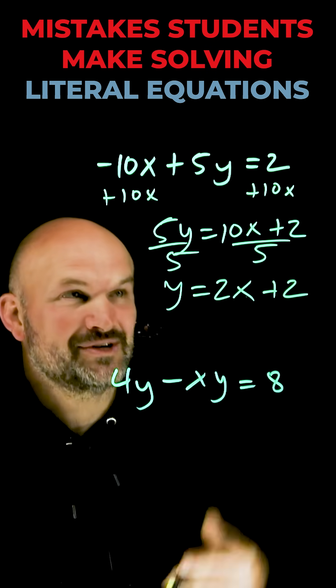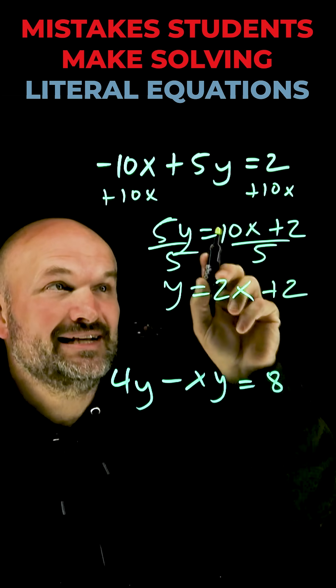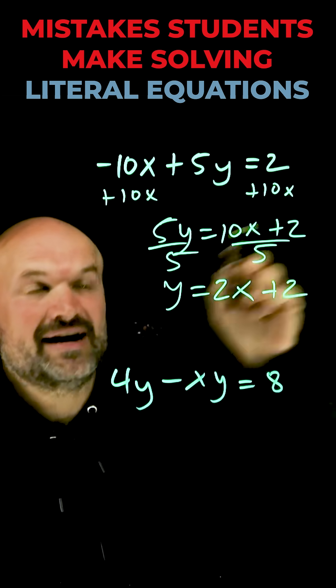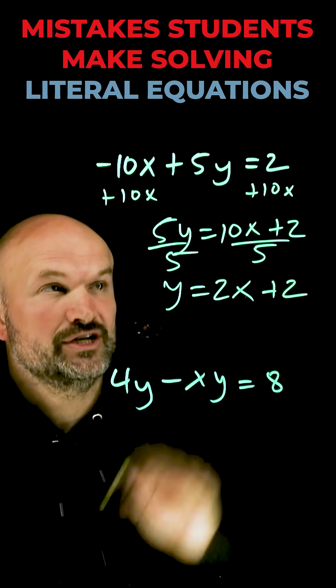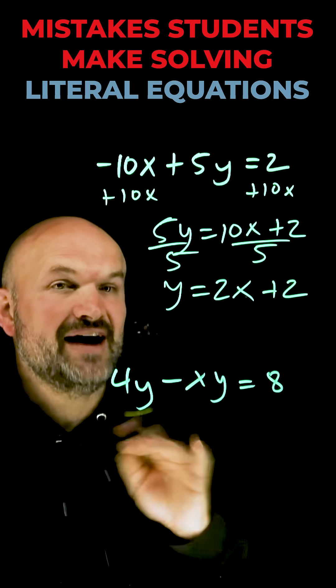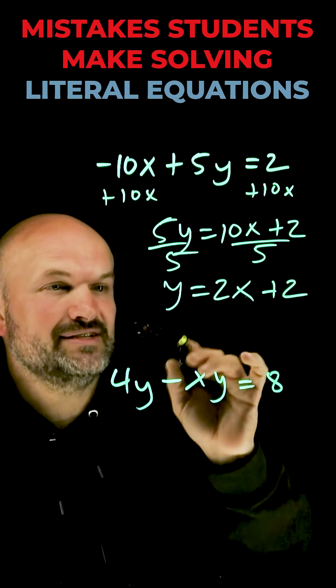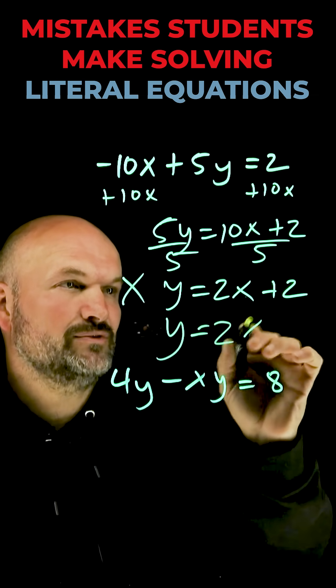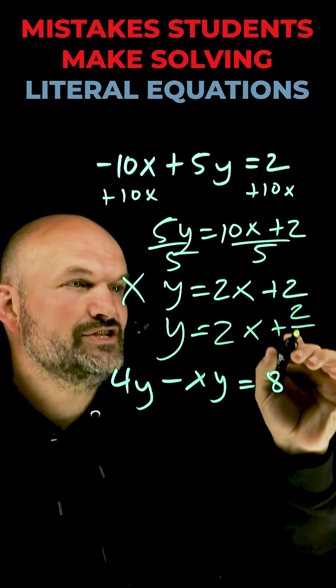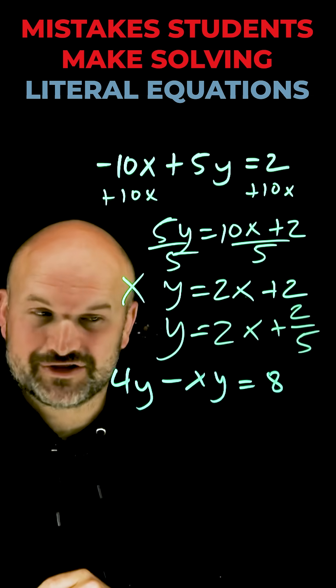Unfortunately that's not the way it works. This 5 is indeed divided into 10x as well as divided into the 2. The reason being is these two terms are separated by addition, so when we're dividing our side by 5 we need to make sure we divide the 5 into both of those terms. So that is incorrect and the final answer is y equals 2x plus 2 over 5, which is going to be a fraction.